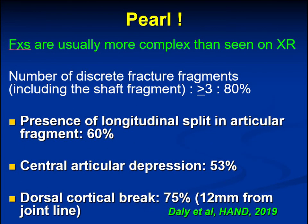These volar marginal fractures tend to be far more complex than is evident on plain radiographs. Daly and colleagues studied 40 CT scans of volar marginal fractures. These authors found that in 80% of patients there were three or more discrete fracture fragments. In addition, they found that in 60% of patients there was a longitudinal split in the articular fragment. Furthermore, they documented central articular depression in 53% of these patients. Finally, a dorsal cortical break 12 millimeters from the joint line was noted in 75% of the patients studied.